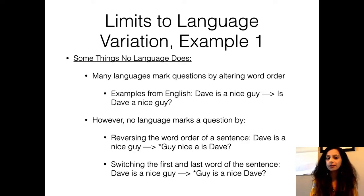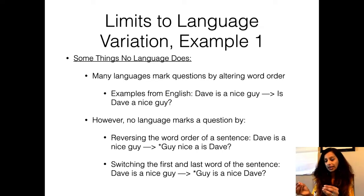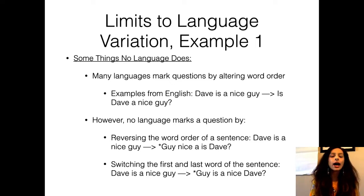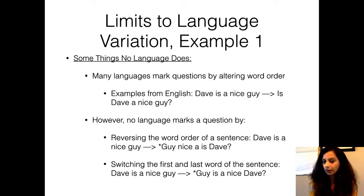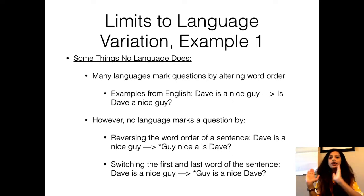Here is the first example of limits to language variation — things that no language does. Take the English sentence 'Dave is a nice guy.' How would you make this into a question? The way English does this is by changing word order: you invert the verb 'is' and the subject 'Dave' to get 'Is Dave a nice guy?' This is a very systematic way of forming questions in English. But what no language does is simply reverse the entire word order — going from 'Dave is a nice guy' to 'Guy nice a is Dave' — just reversing each word. That is ungrammatical.